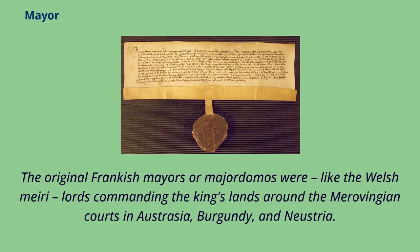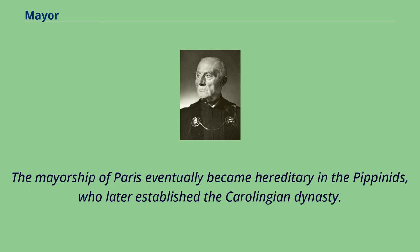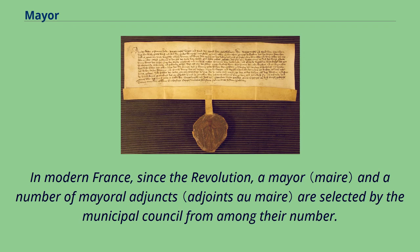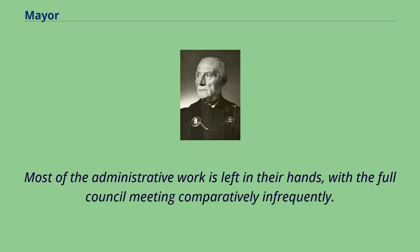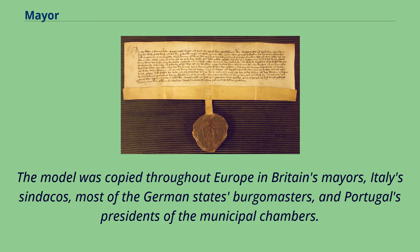The original Frankish mayors or majordomos were, like the Welsh equivalent, lords commanding the king's lands around the Merovingian courts in Austrasia, Burgundy, and Neustria. The mayorship of Paris eventually became hereditary in the Pippinids, who later established the Carolingian dynasty. In modern France, since the revolution, a mayor and a number of mayoral adjuncts are selected by the municipal council from among their number. Most of the administrative work is left in their hands, with the full council meeting comparatively infrequently. The model was copied throughout Europe — in Britain's mayors, Italy's sindacos, most of the German states' burgomasters, and Portugal's presidents of the municipal chambers.